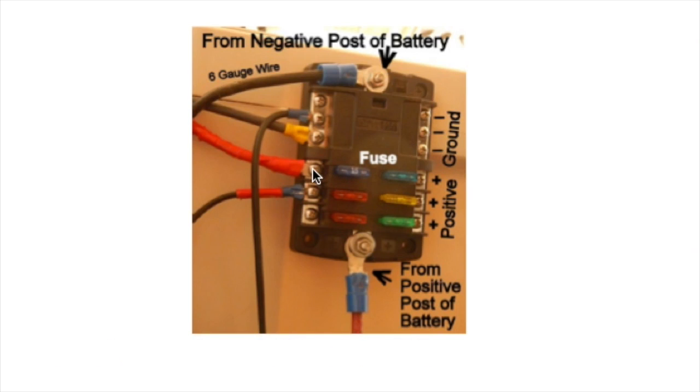All of the positive wires would be connected to these terminals and all of the ground wires would be connected to these. This is where the main negative wire coming from the battery is connected and down here is where the positive wire is connected. So it's a pretty simple system.